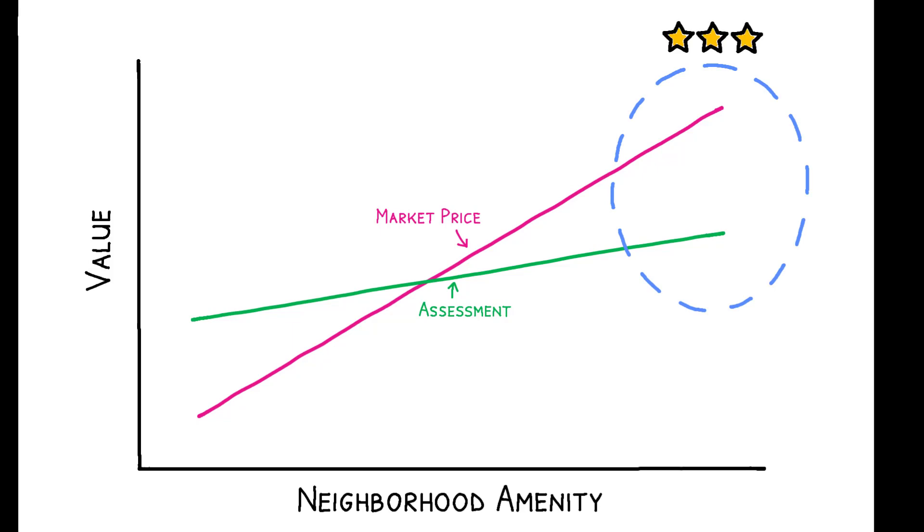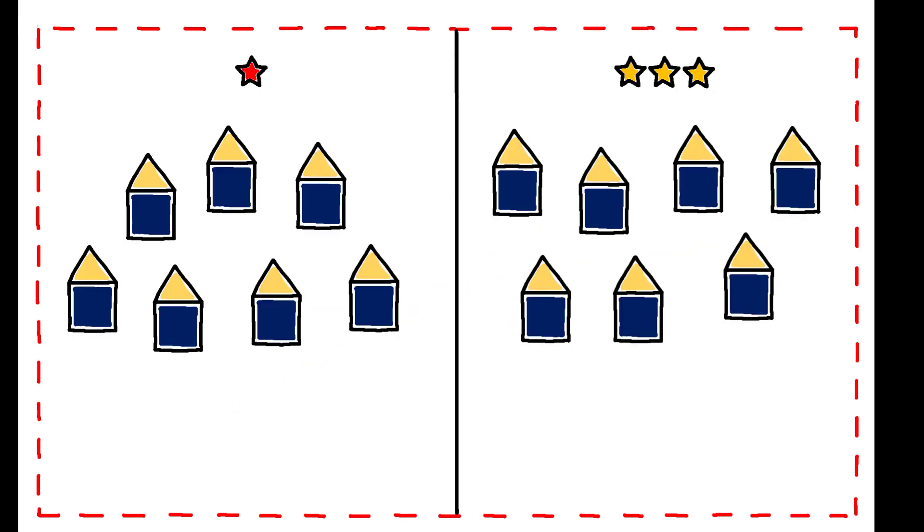Crucially, however, assessments tend to be far less responsive to neighborhood-level attributes than market prices are. As a result, within the same jurisdiction, neighborhoods with highly-valued amenities are undervalued by assessors, while those with negatively-valued amenities are overvalued. This generates spatial inequality in tax burdens.